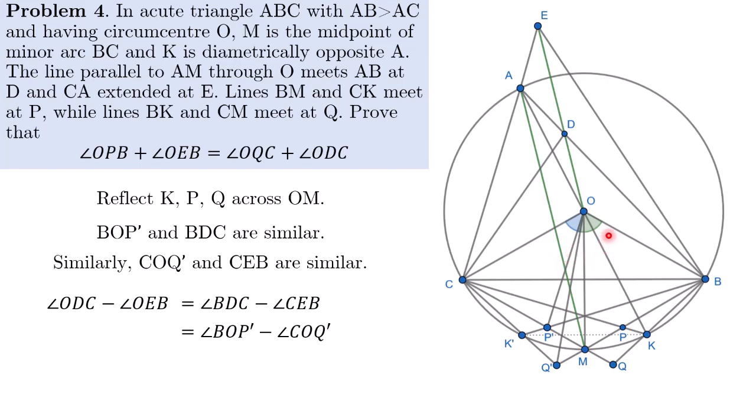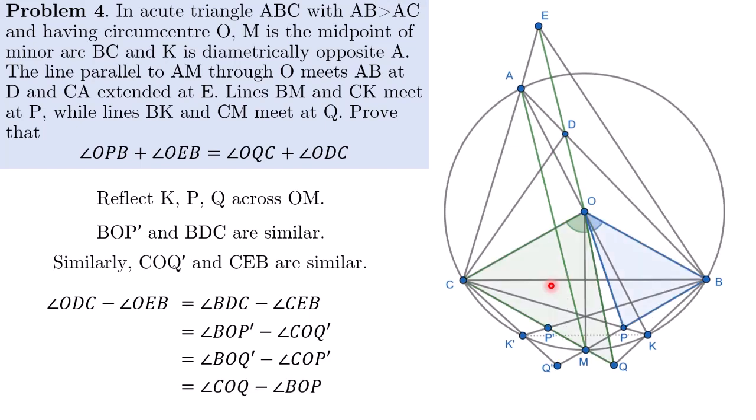So angle BDC is equal to angle BOP', angle CEB is equal to angle COQ'. So this is the green angle here, sorry, BOP' minus COQ'. And there's this common sliver intersected by both angles.